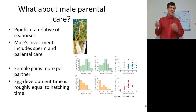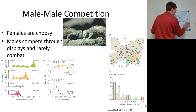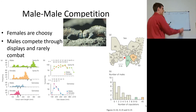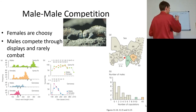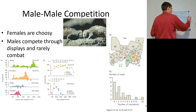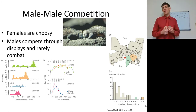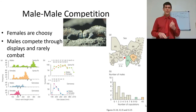If females get to be choosy, males should try to get chosen. This competition among males to be selected by females is called intersexual competition. Meanwhile, intrasexual competition is when males compete directly against each other for mates — since most males have zero mates while some have many, there is strong selection pressure to be the male that wins access to females.